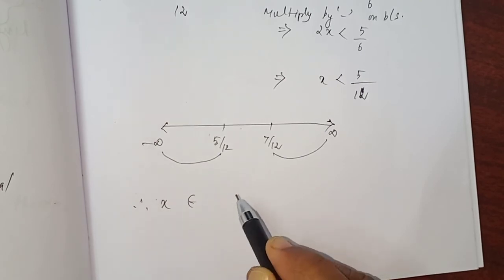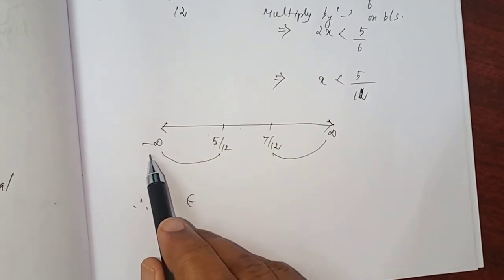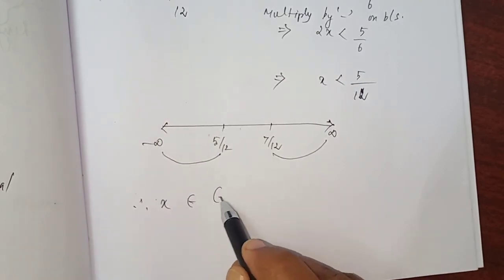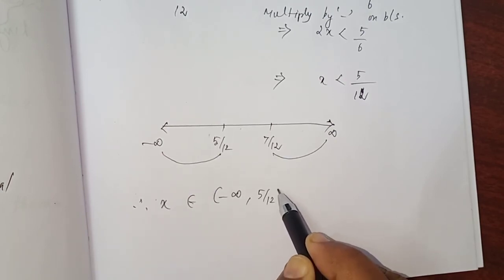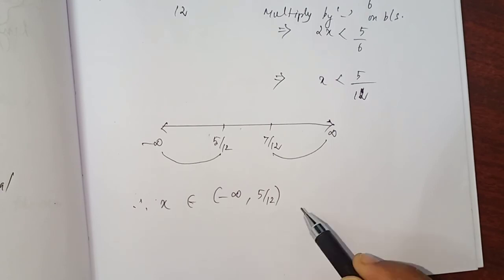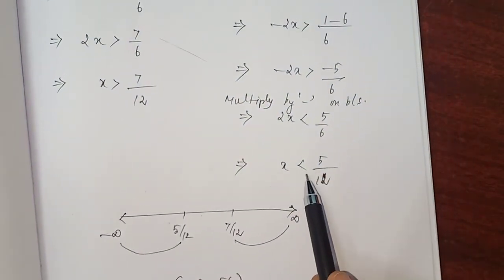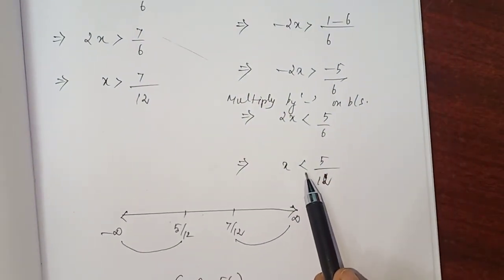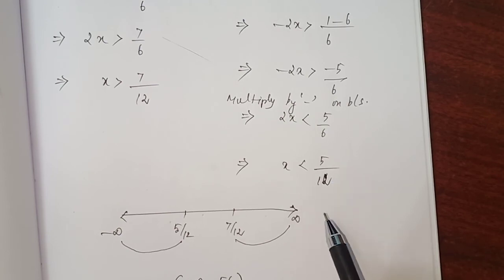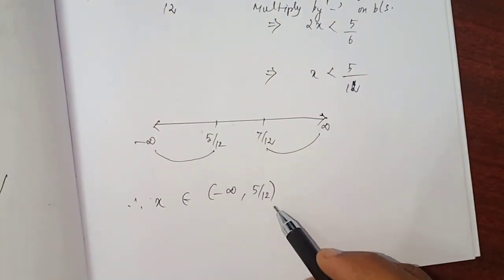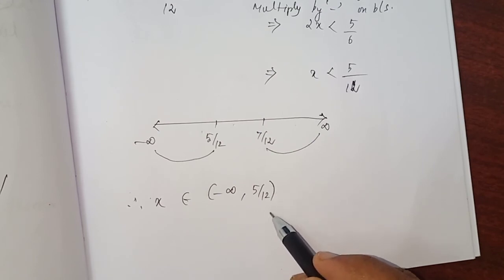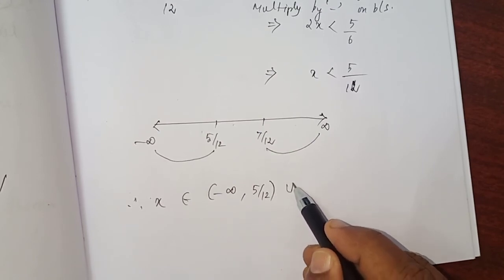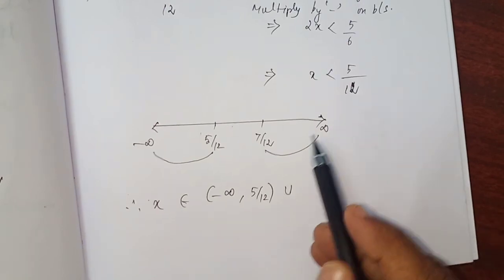Therefore, x belongs to minus infinity to 5 by 12. Minus infinity to 5 by 12 like this. Write open bracket because we have strictly less than. Whenever strictly less than or strictly greater than comes, you have to put the bracket like this. Write open bracket, union.